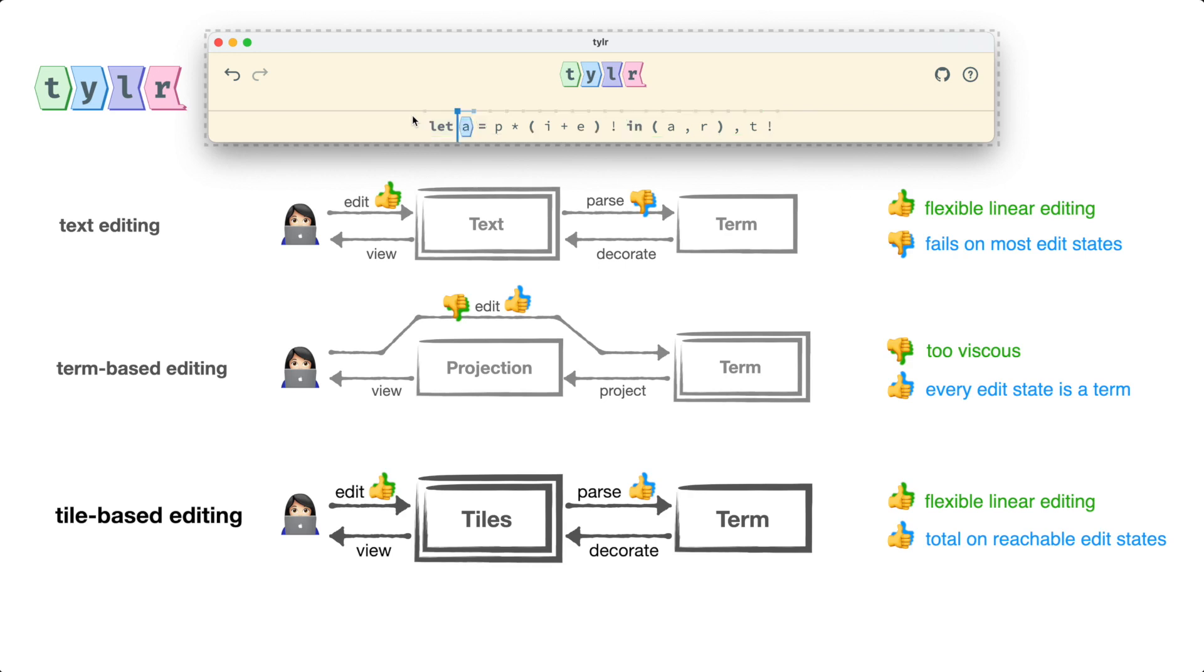So for example, I can move over here. I can select this plus E, which does not correspond to a complete term. I could pick it up. I can bring it over. I can put it down. And all the while, Tyler will make sure that we can always return to a well-formed term structure. So let's take a look at how Tyler makes this possible.